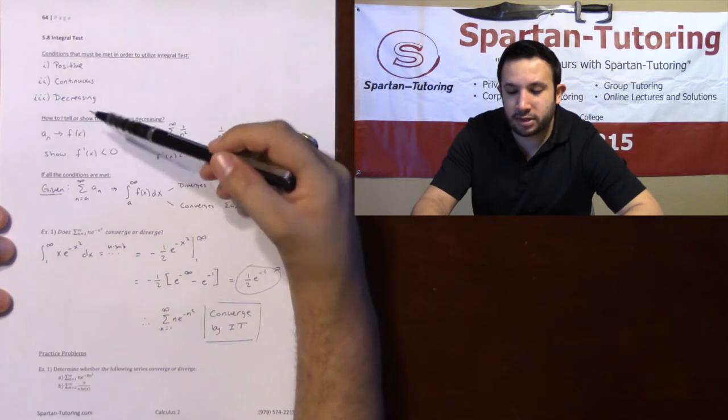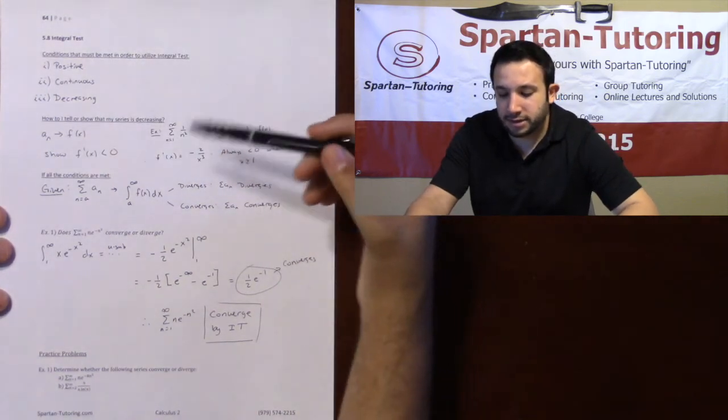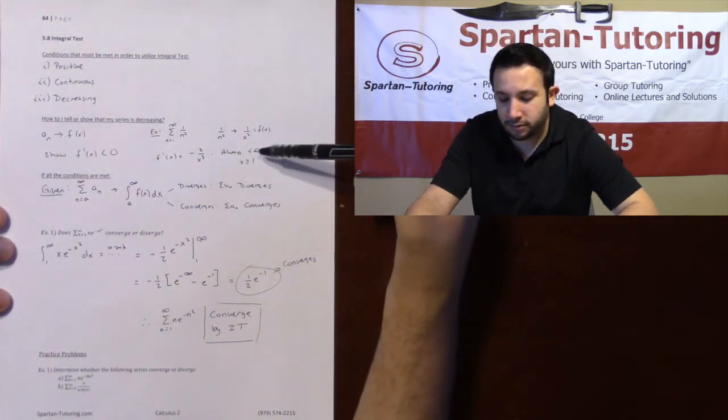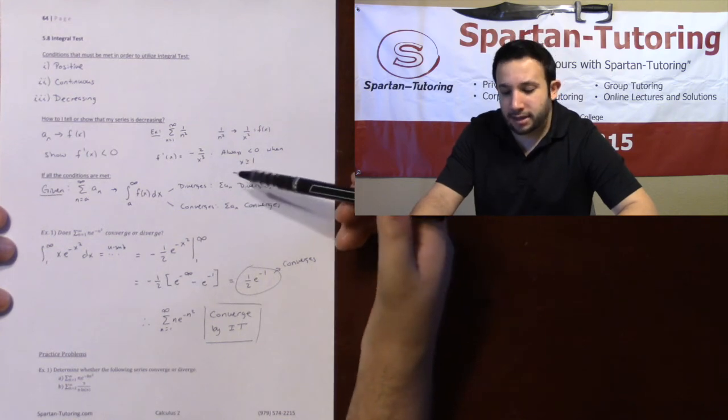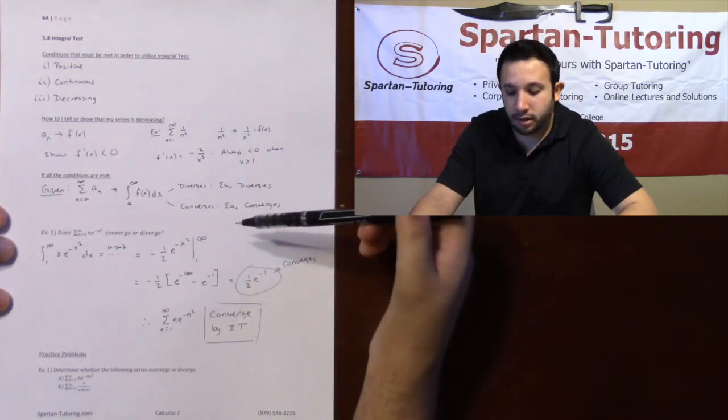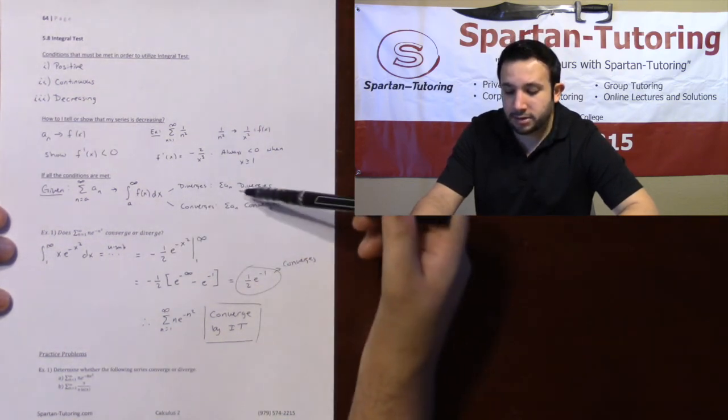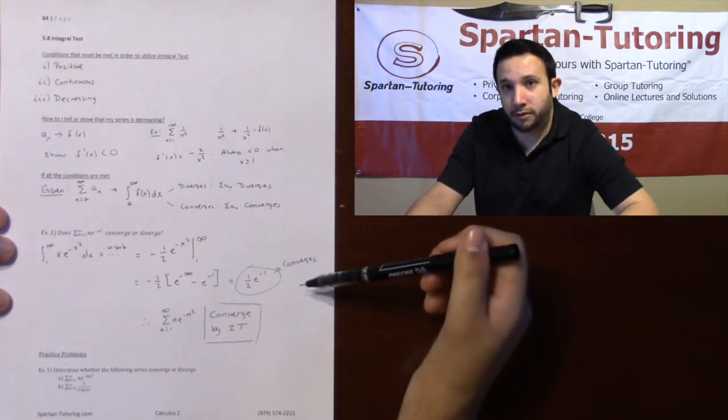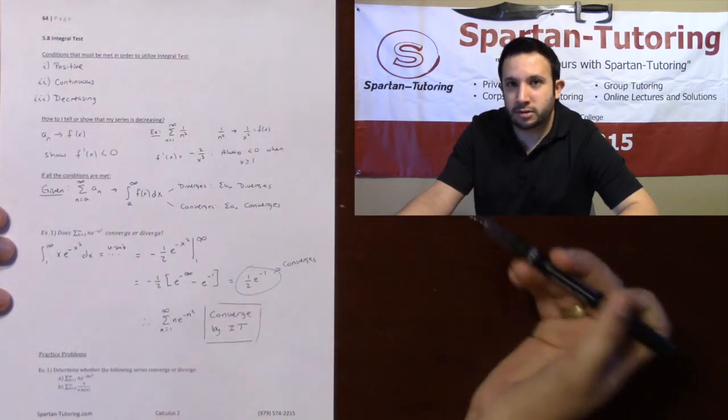So recapping this real quick: check to make sure it's positive, continuous, decreasing. To show decreasing, take the derivative, show that it's negative. And then if that's the case, just do the integral. If the integral diverges, then your sum diverges. In this case, my integral converged, so your series does too.